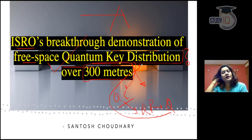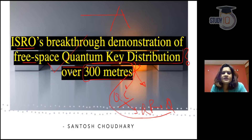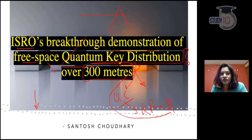Generally, quantum communication is very complicated. Quantum physics is very difficult. But here I am going to try that you can understand quantum communication in the easiest and simplest language. Stay here for the next 10-15 minutes and quantum communication and quantum distribution will be clear.